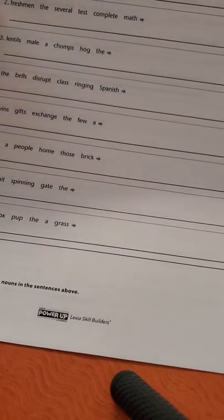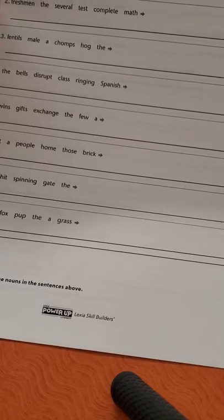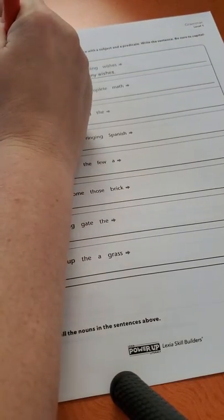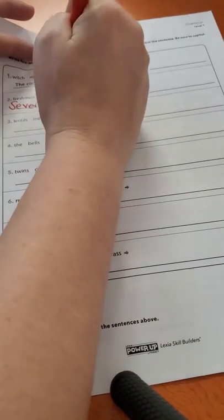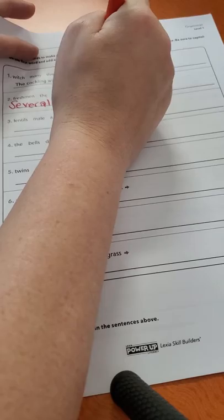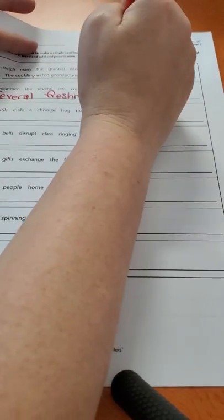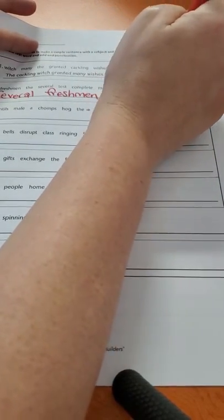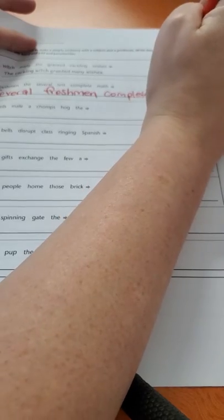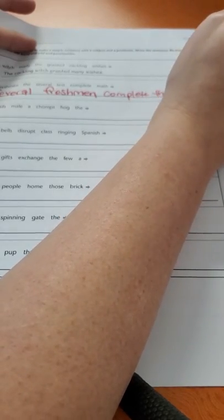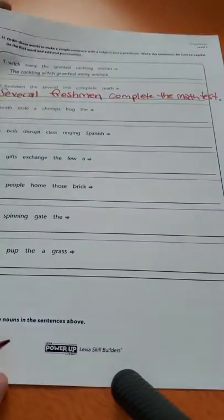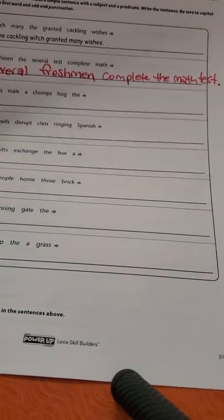So let's go ahead and try number two. We have freshmen, the several tests complete math. Hmm, so how about several freshmen complete the math test. And then we need to put a period at the end. All right, so that's how we're going to do this.